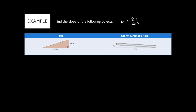We don't have ordered pairs, so you just have to think: how much am I moving in Y? How much am I moving in X? You're looking for the distance — the distance in Y over the distance in X. For the hill, you're literally taking your vertical, which is 300 feet, and dividing it by 1000 feet.